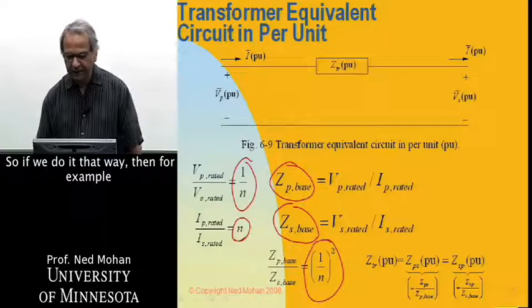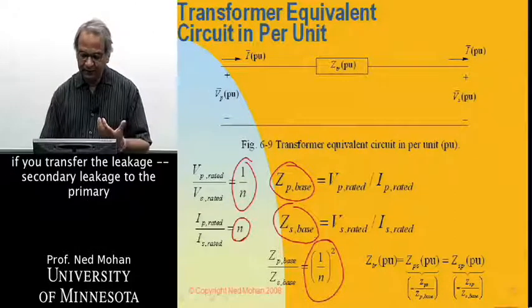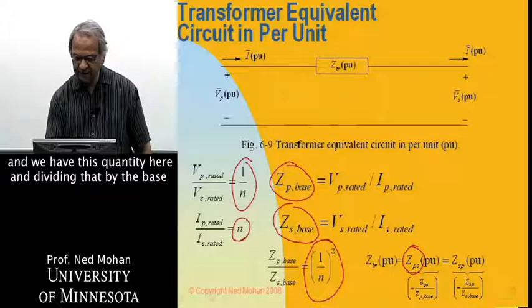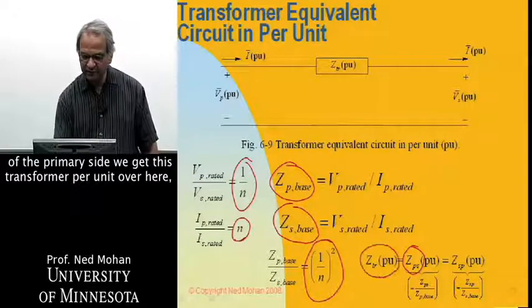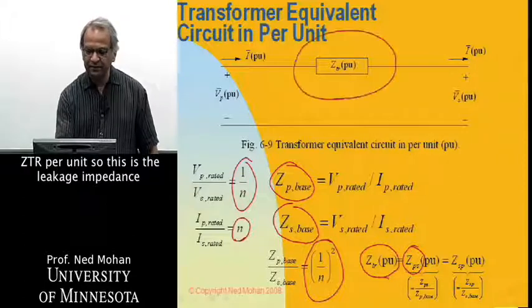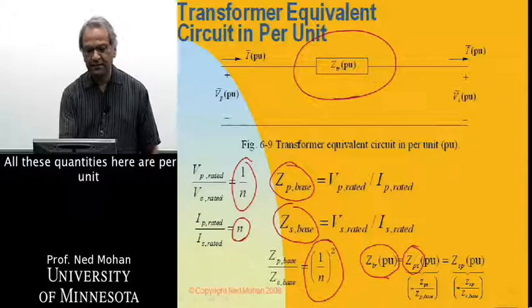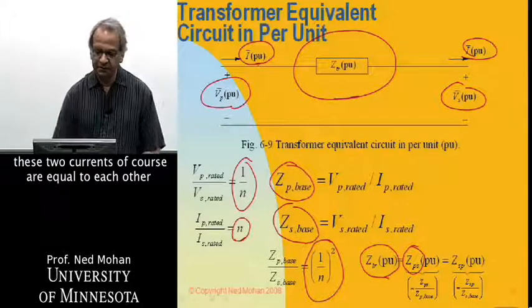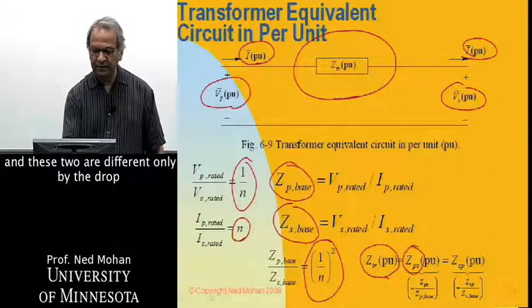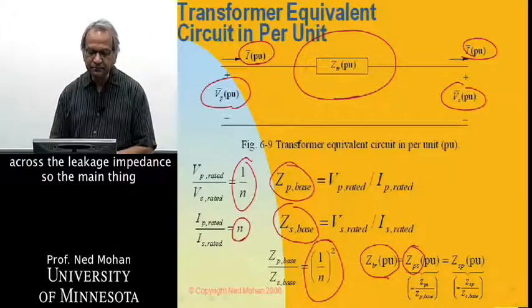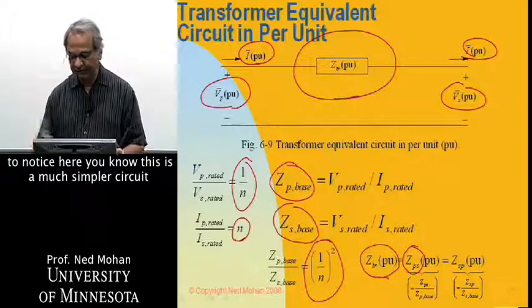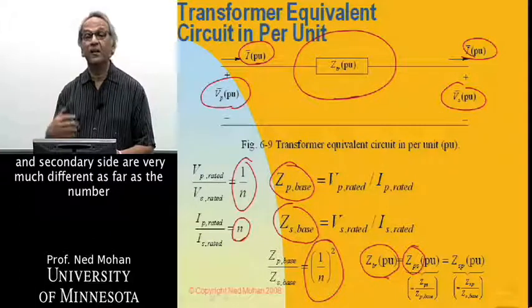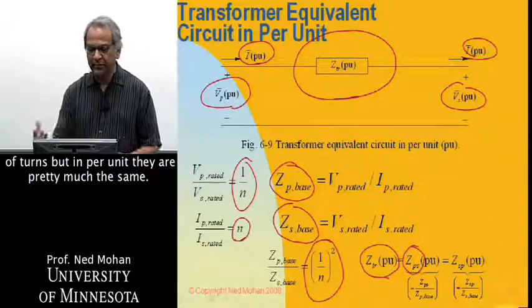So if we do it that way, then, for example, if we transfer the leakage, secondary leakage to the primary, and we have this quantity here, and dividing that by the base of the primary side, we get this transformer per unit over here, ZTR per unit. So this is the leakage impedance of the transformer in per unit. And all these quantities here are in per unit, and they'll be pretty much equal to, these two currents, of course, are equal to each other, and these two are different and these two are different only by the drop across the leakage impedance. So the main thing to notice here is that this is a much simpler circuit because even though the voltages on the primary and the secondary side are very much different because of the number of turns, but in per unit, they are pretty much the same.